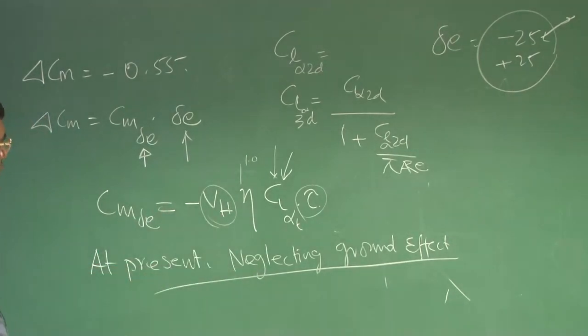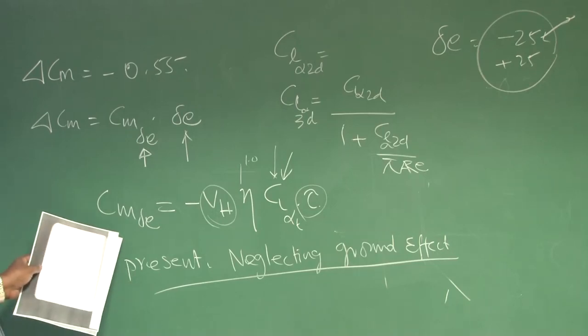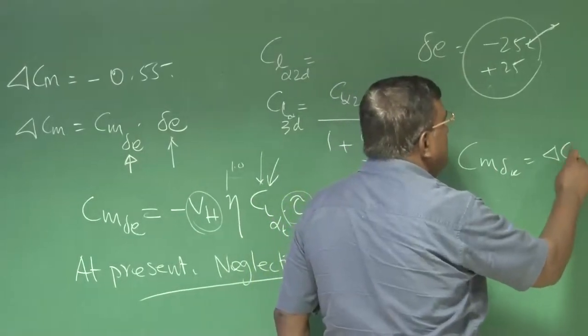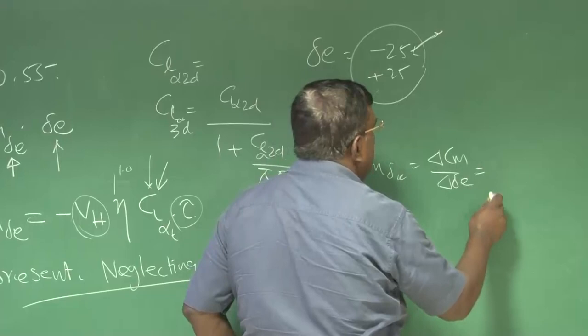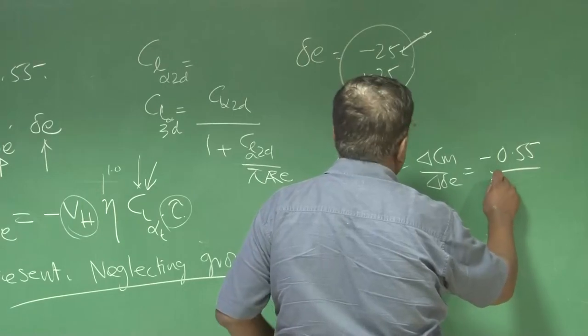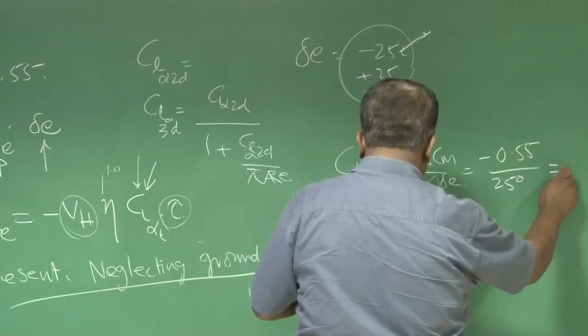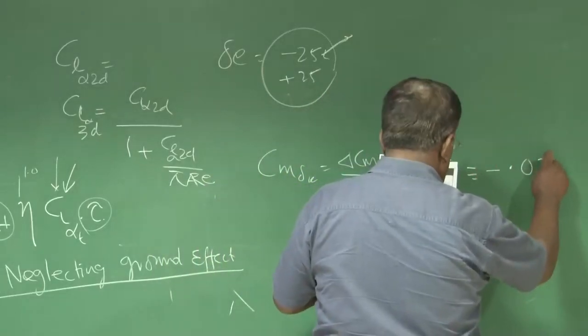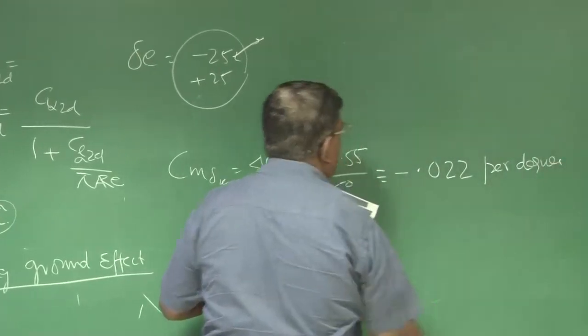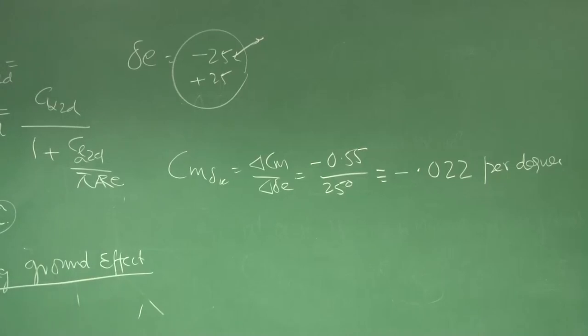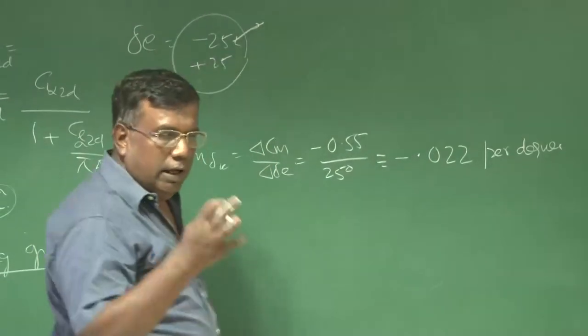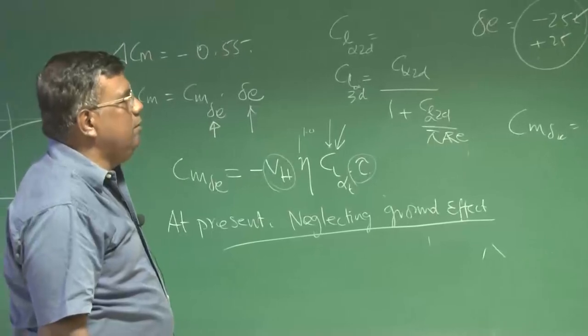As a practitioner, you must keep that 7-8 degree margin. That means effectively if your elevator is within plus minus 25, we should not operate beyond 17 degrees elevator deflection roughly. This is Cm_delta_E expression, and Cm_delta_E is delta Cm by delta(delta E). We are taking minus 0.55 divided by 25 degrees. This will become minus 0.022 per degree. In per radian, multiply by 57.3, so it comes around minus 1.1. That is a typical value of Cm_delta_E.